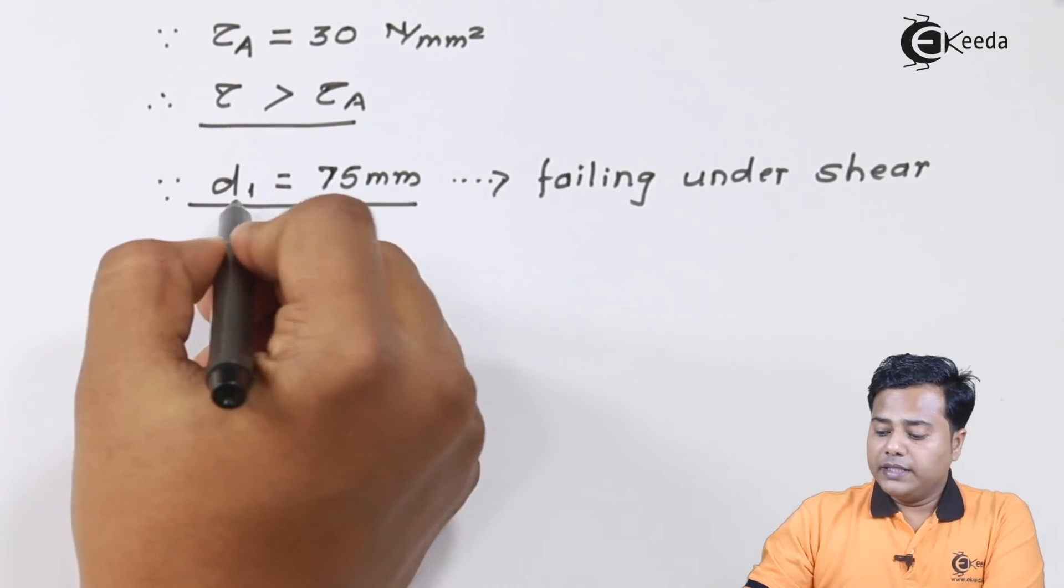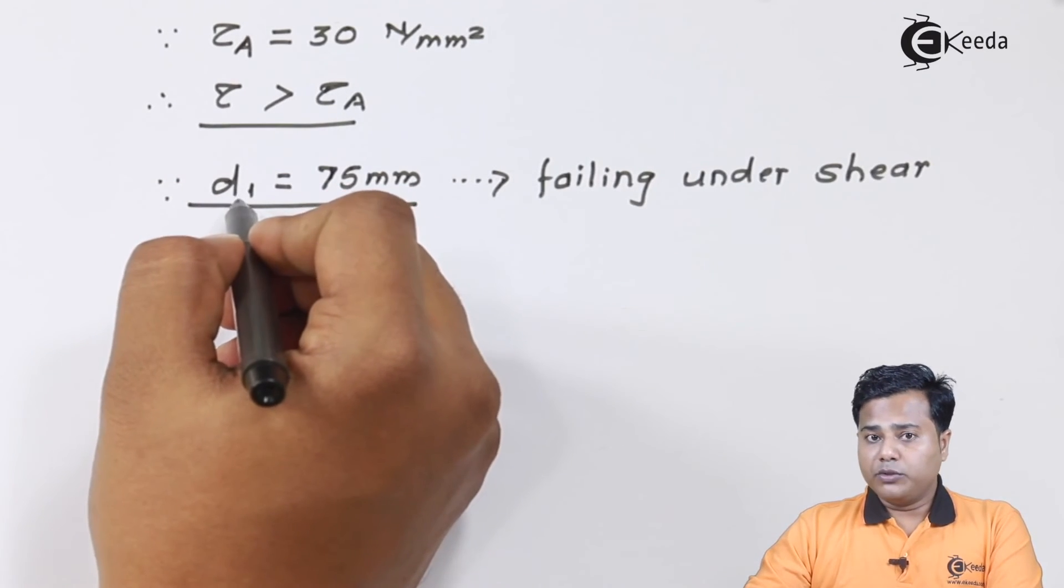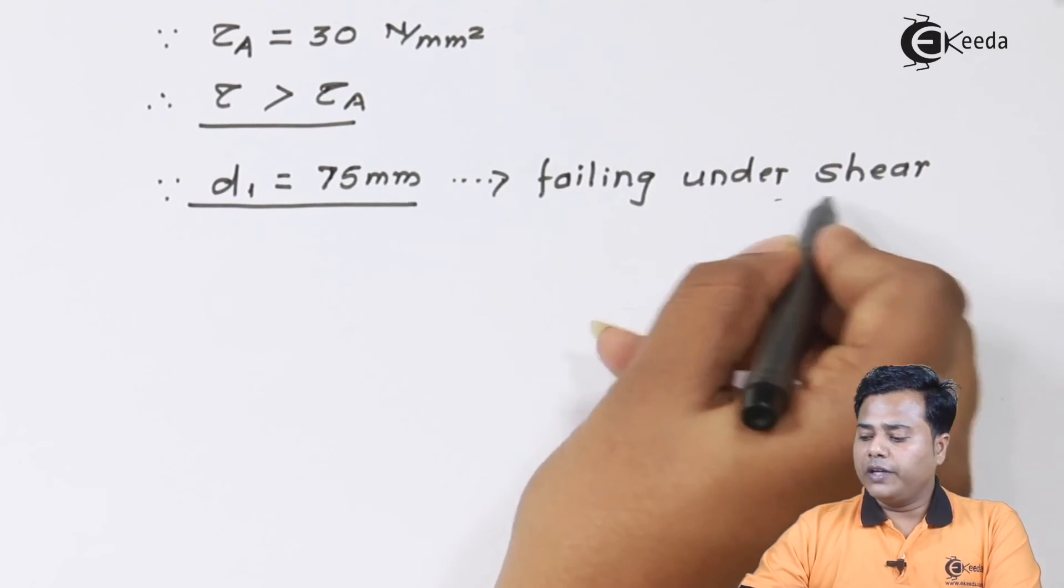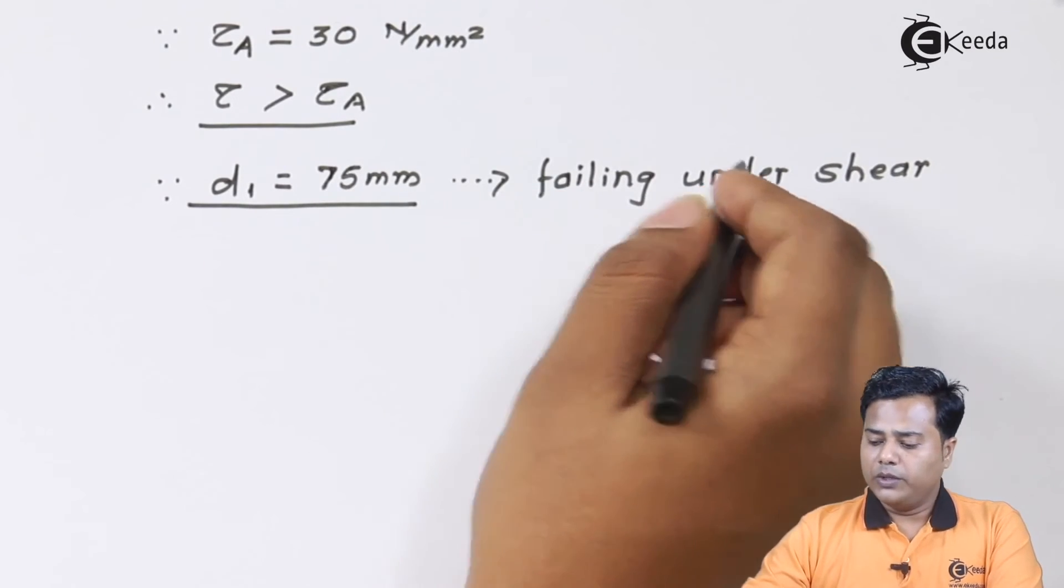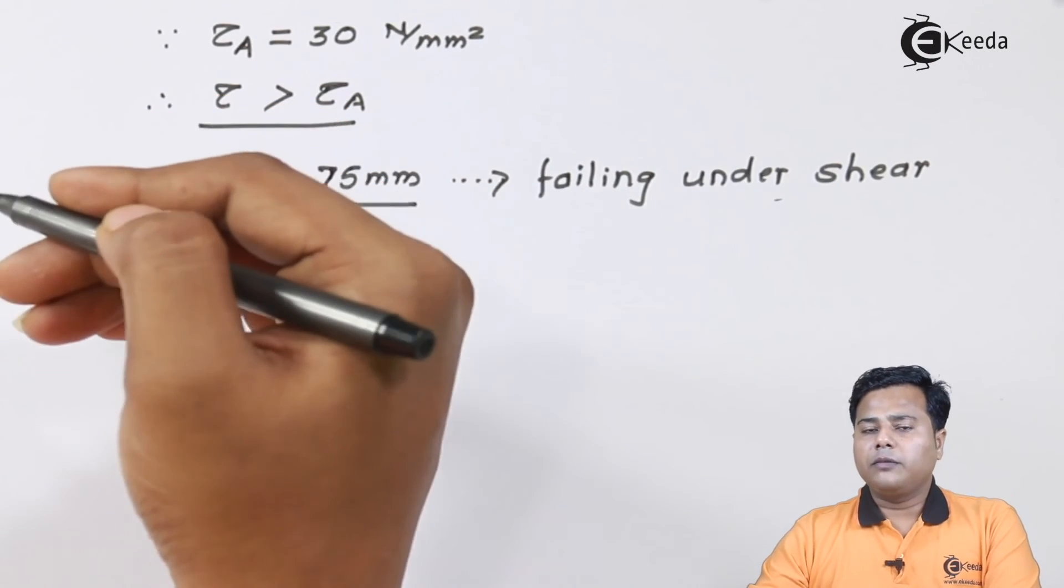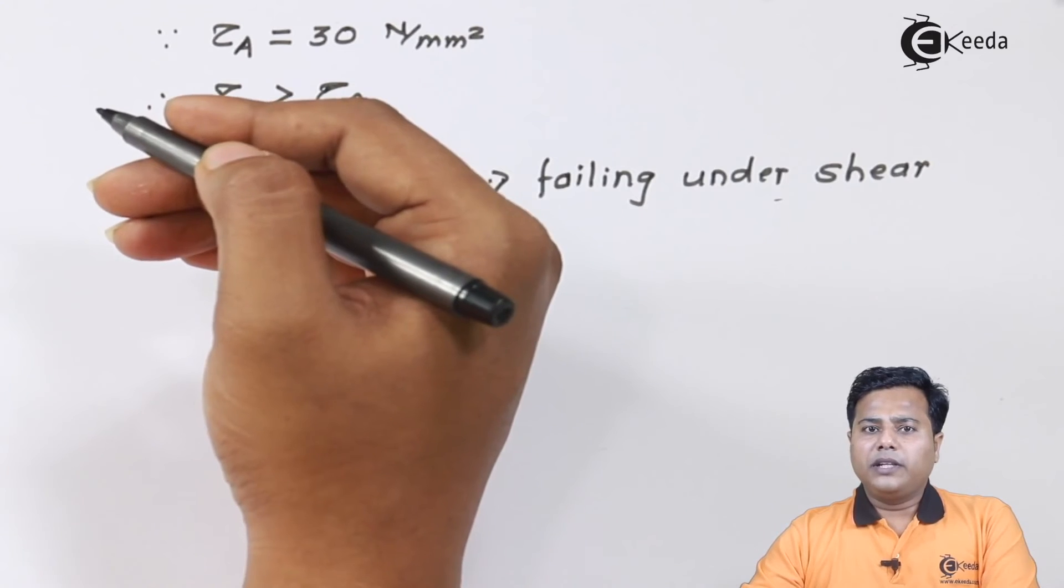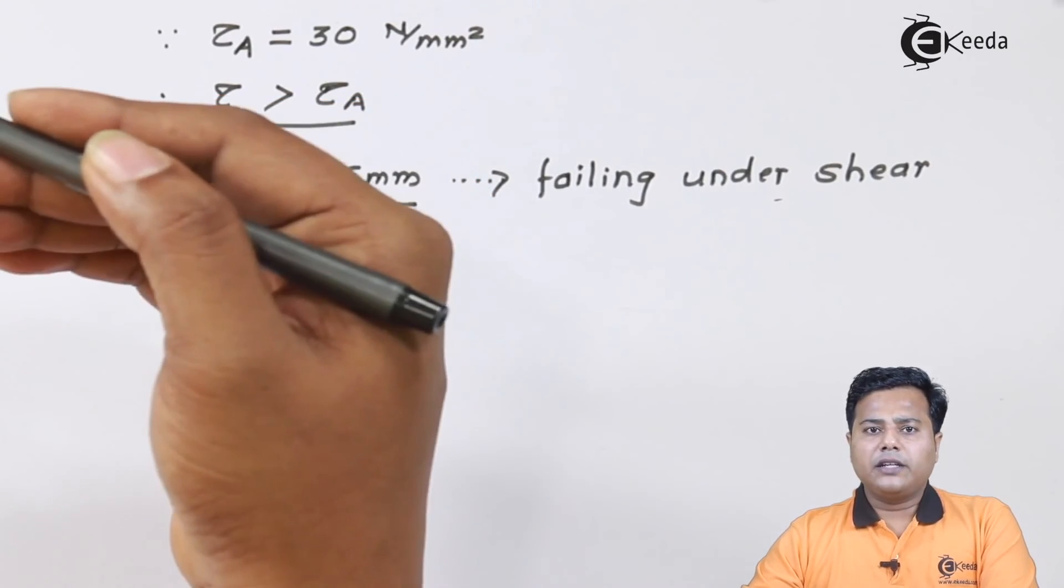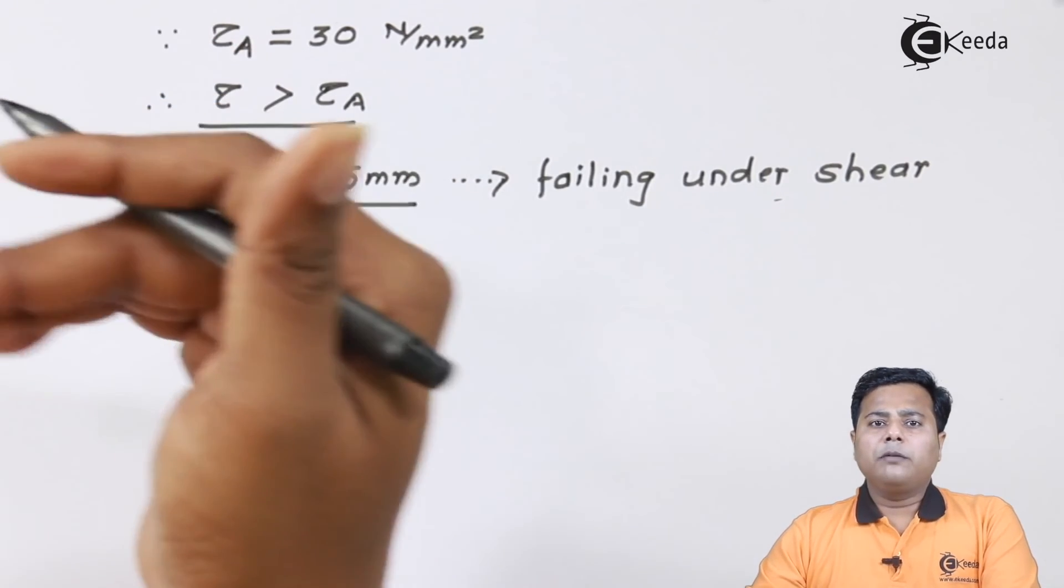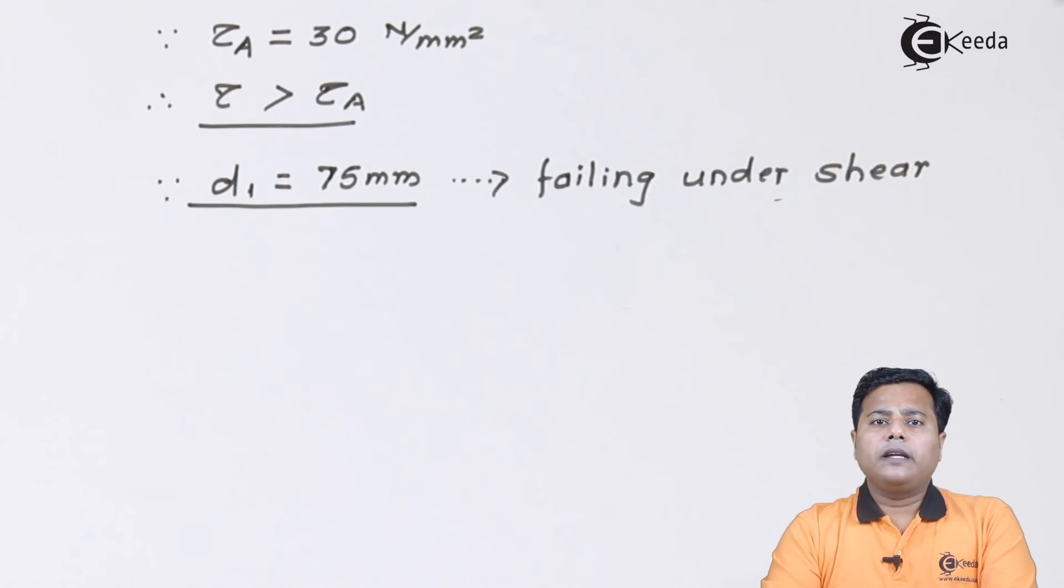Friends, the diameter that we have got using the design procedure, 75 mm, is not safe for shear failure, and hence we have to increase the value. There are multiple trials that you can go through because it's a trial and error method. You have to increase it.